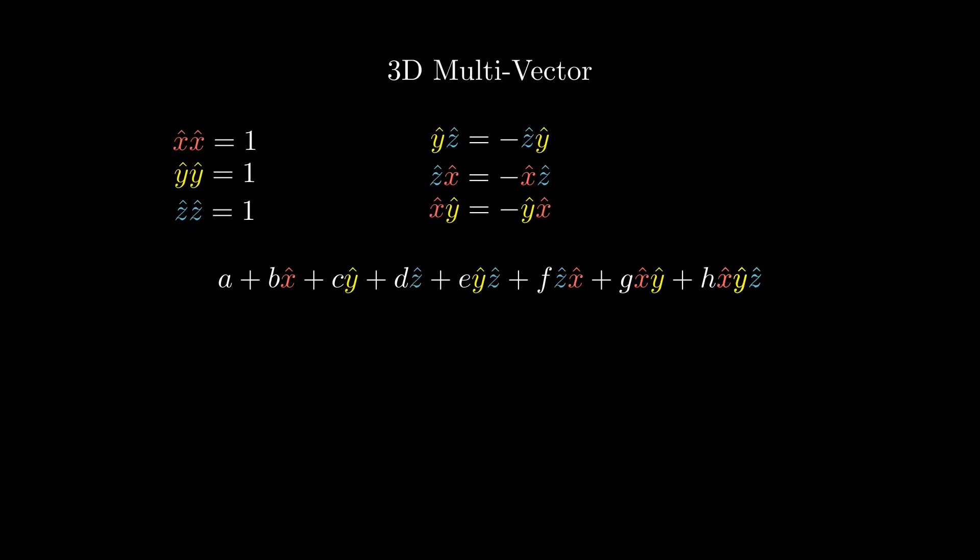Now notice this. Take what we call the tri-vector part and square it. Swap twice, convert to one. Swap once and convert to one twice. And this is how we relate this part of a multivector with the imaginary unit.